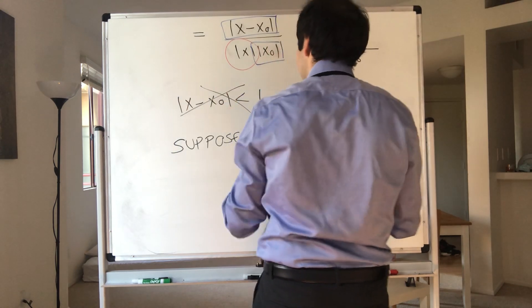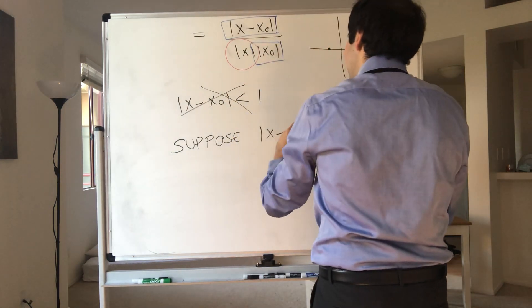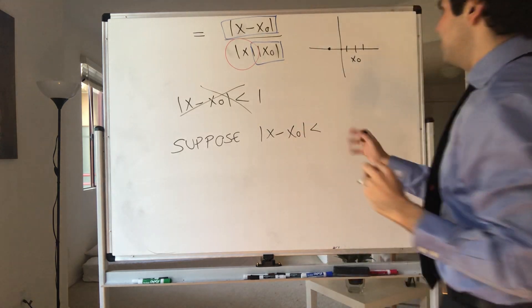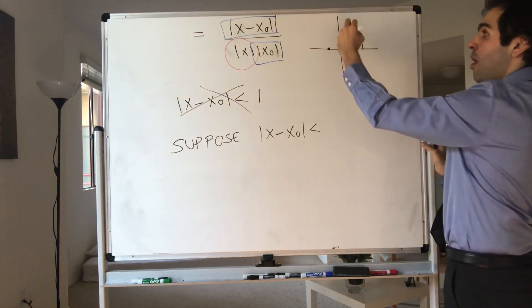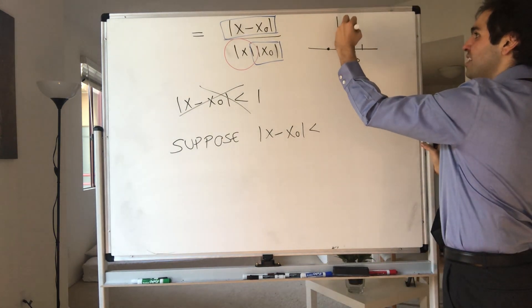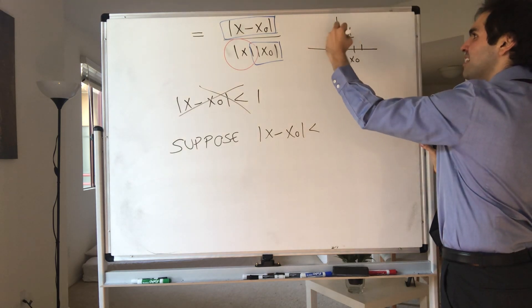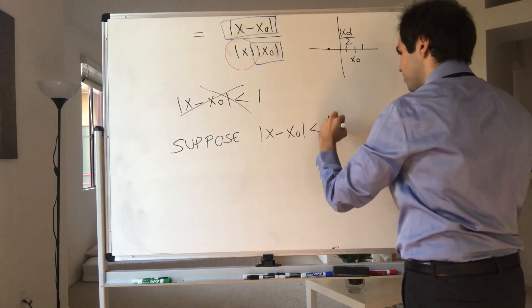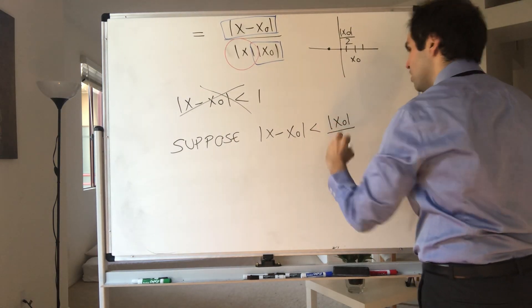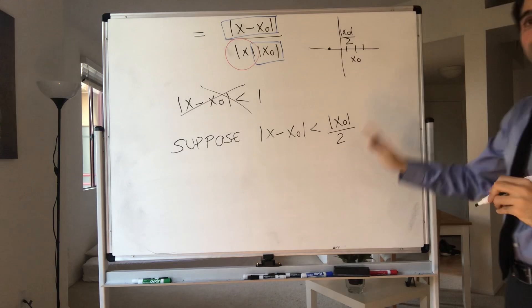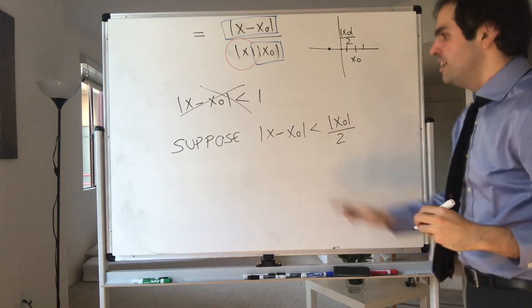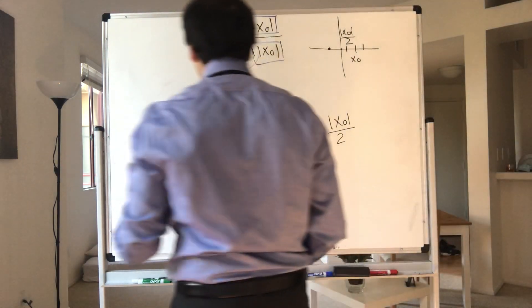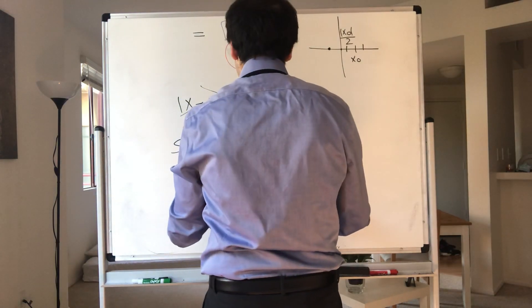So here's what we're going to do. Suppose x minus x naught is not less than one, but even smaller. In particular, choose it to be less than absolute value of x naught over two. And then you'll see good things will happen.